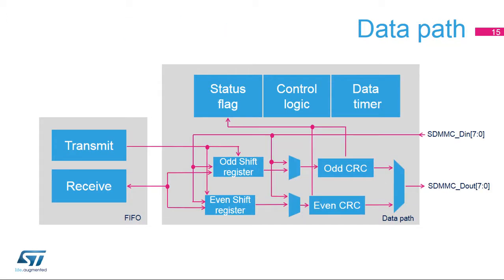The data path transfers data both to and from the SD, SDIO, or MMC card. In single data rate (SDR) mode, on each SDMMC CK clock cycle, the data path can send one, four, or eight bits depending on the bus width configuration. In double data rate (DDR) mode, on each SDMMC CK clock cycle, the data path can send two, eight, or 16 bits depending on bus width. Transfer logic is clocked by the SDMMC CLK clock and divided into two subunits: one for data sent and one for data received, with dedicated control bits and status flags.